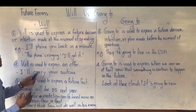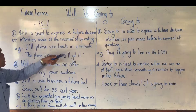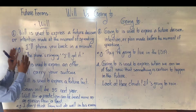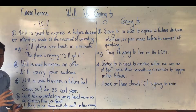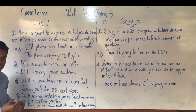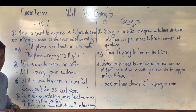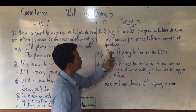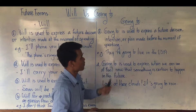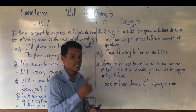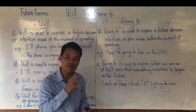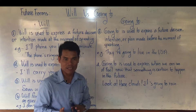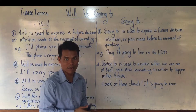Let's go. Will is used to express a future decision or intention made at the moment of speaking. This means that you have no plan — everything happens immediately at the moment of speaking. How about going to? Going to is used to express a future decision, intention, or plan made before the moment of speaking. It means that before you speak, you already planned to do something, and then you just speak it out.